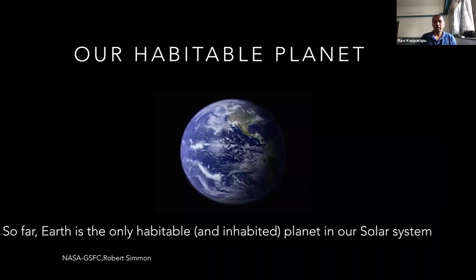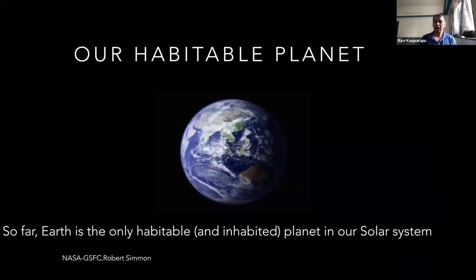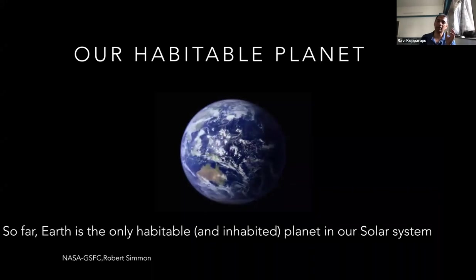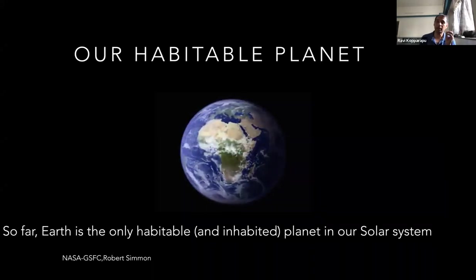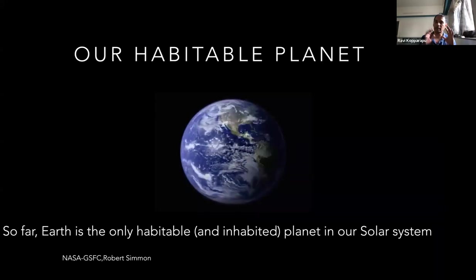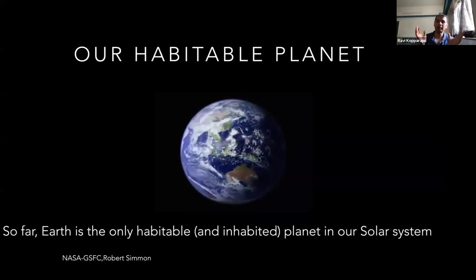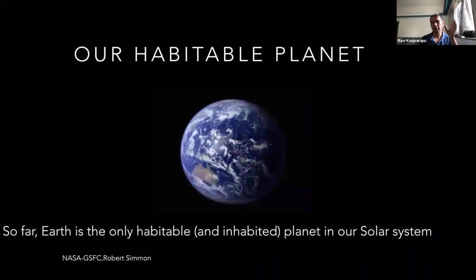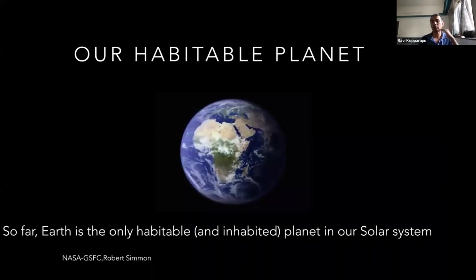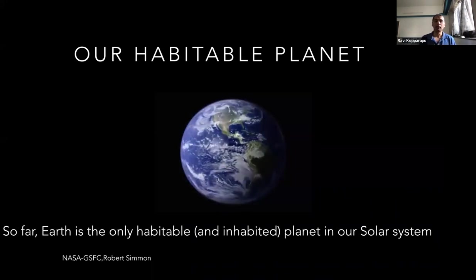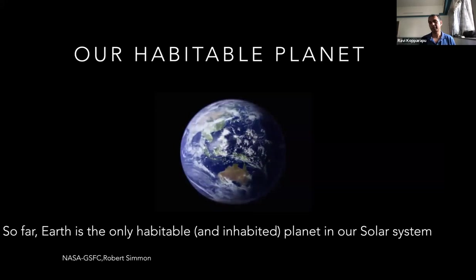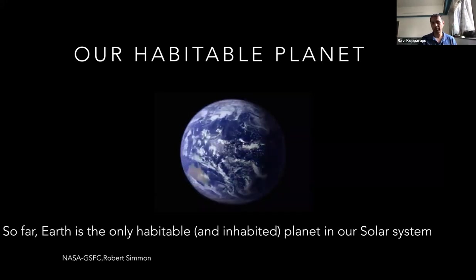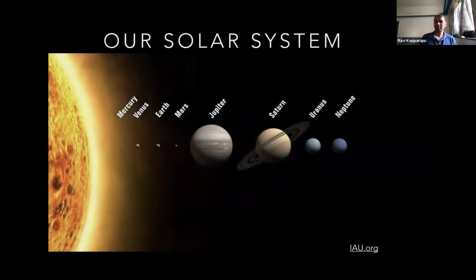I'll begin with our habitable planet. So far, Earth is the only habitable and inhabited planet in our solar system — and there is a difference. A planet can be habitable but need not be inhabited. Inhabited means there is life on the planet. Habitable means there are all the right conditions for life, but it may not have life on it. Those right conditions include the right kind of atmosphere and water on the surface or interior of the planet. So far we know one inhabited planet in the entire universe, which is Earth — confirmed evidence.